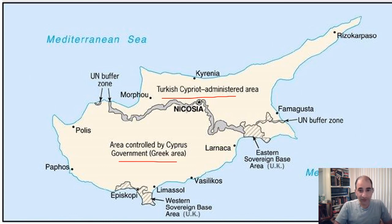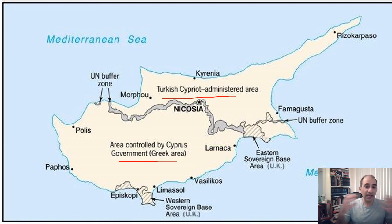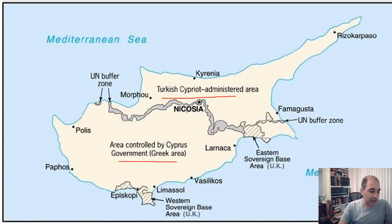The Cyprus issue created diplomatic tension between the United States and Turkey that is still an issue today. The end result is that Cyprus is split: the southern part is controlled by independent Cyprus, and the northern part is basically a puppet of Turkey. That's the other big event that gripped Turkey post-World War II.